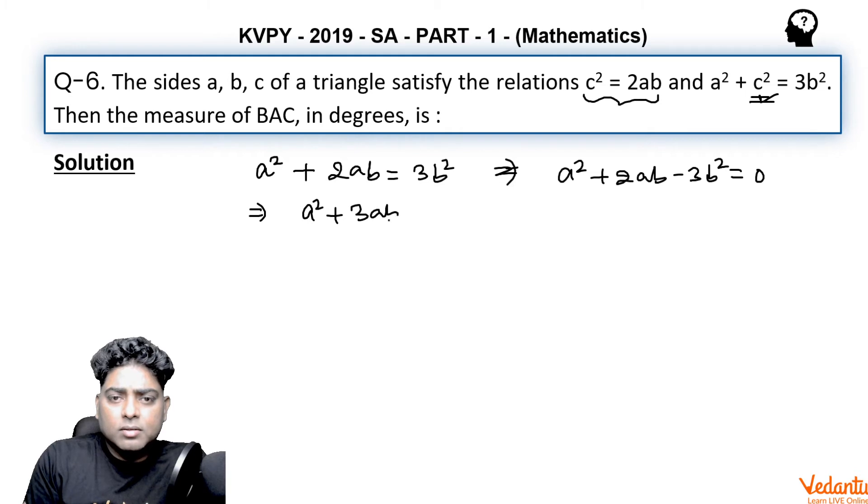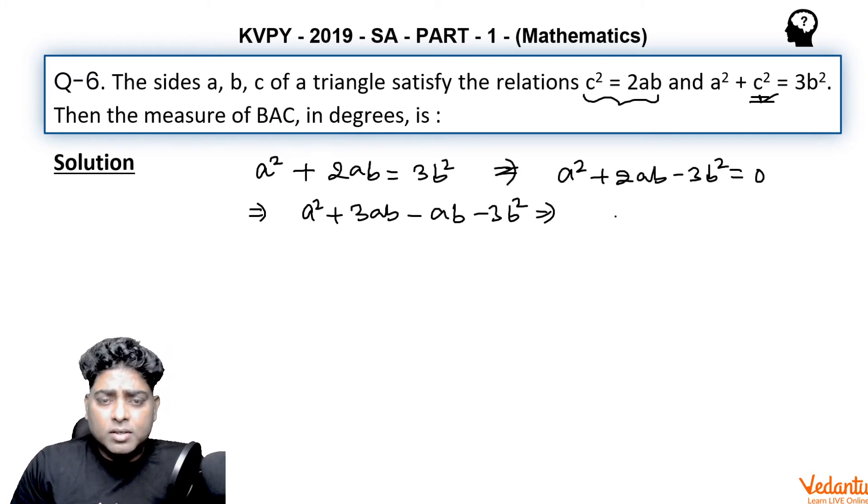We can write this as a² + 3ab - ab - 3b². If I take a common from the first two terms, I get a(a + 3b). From the next two terms, I take b common, giving b(a + 3b).